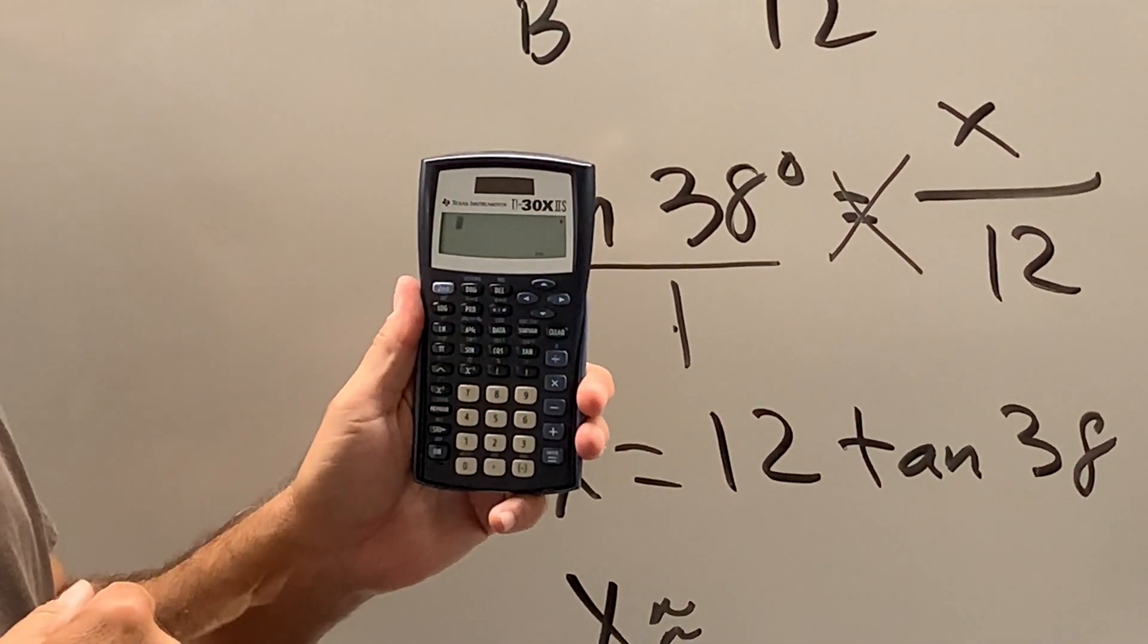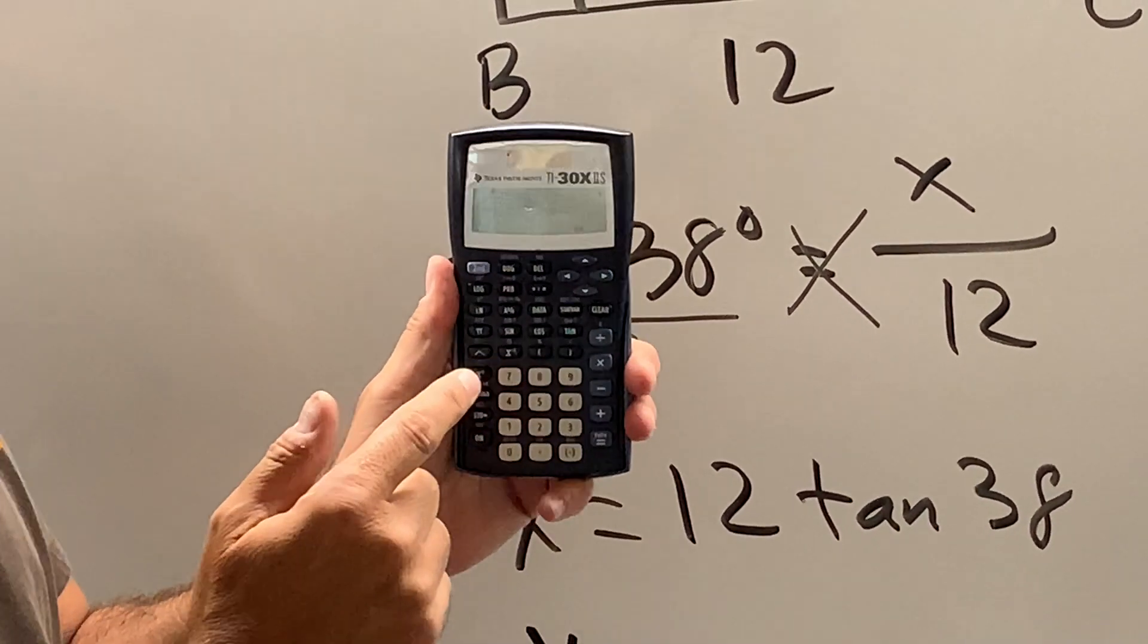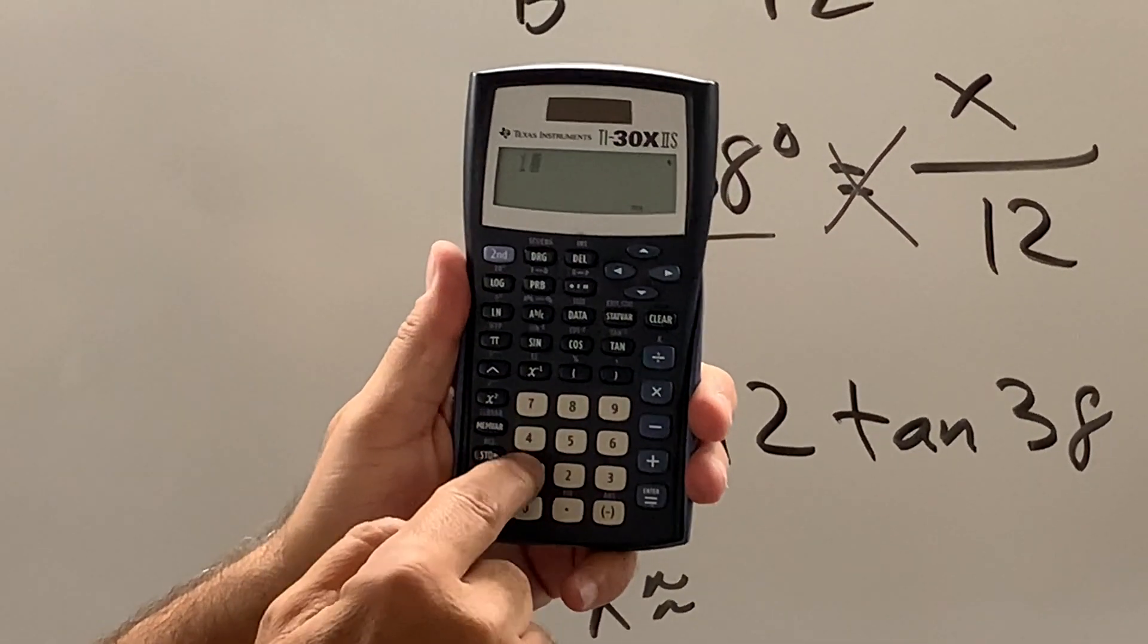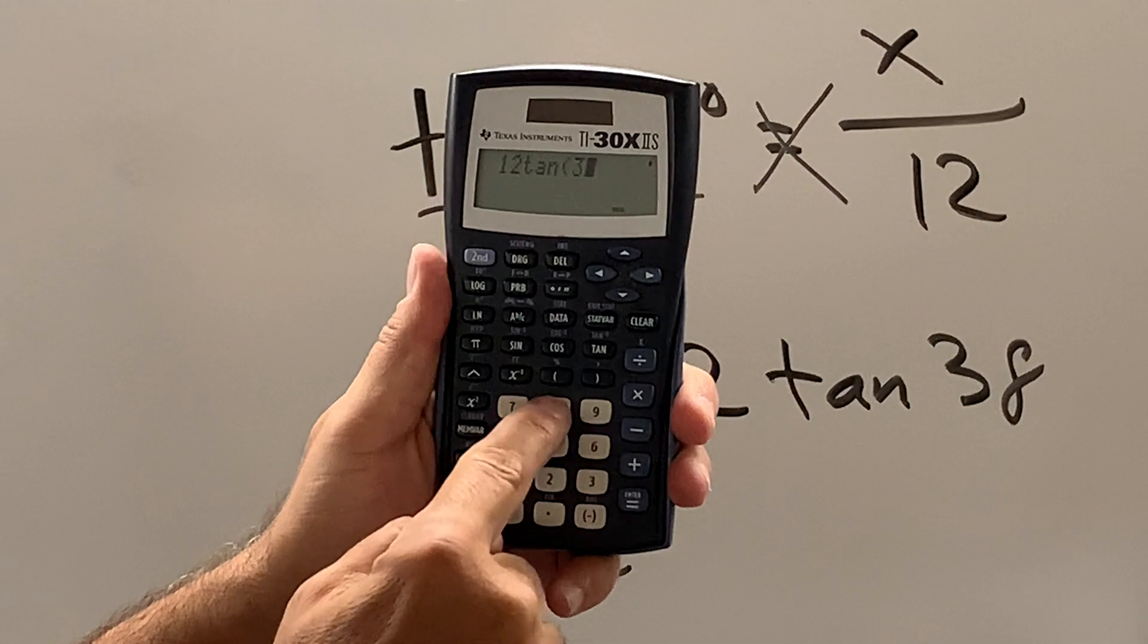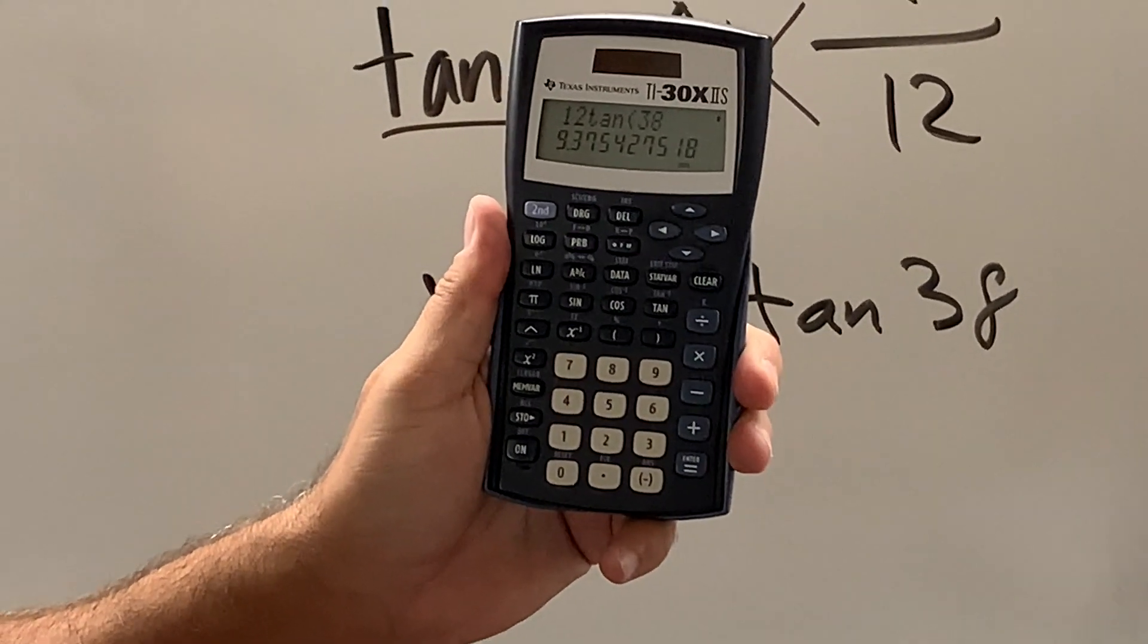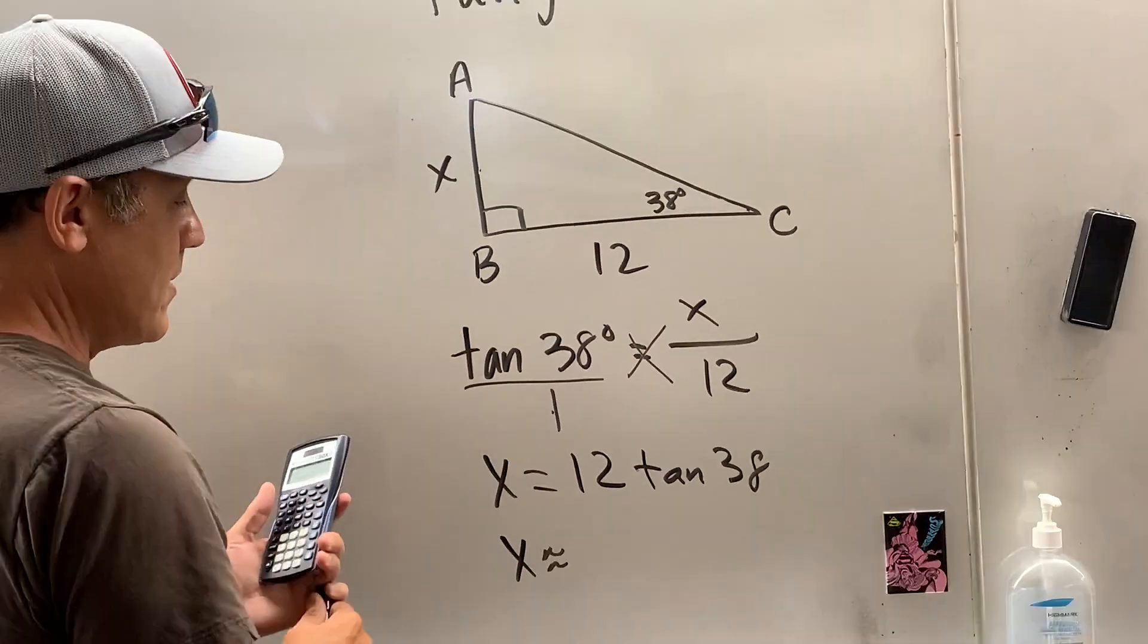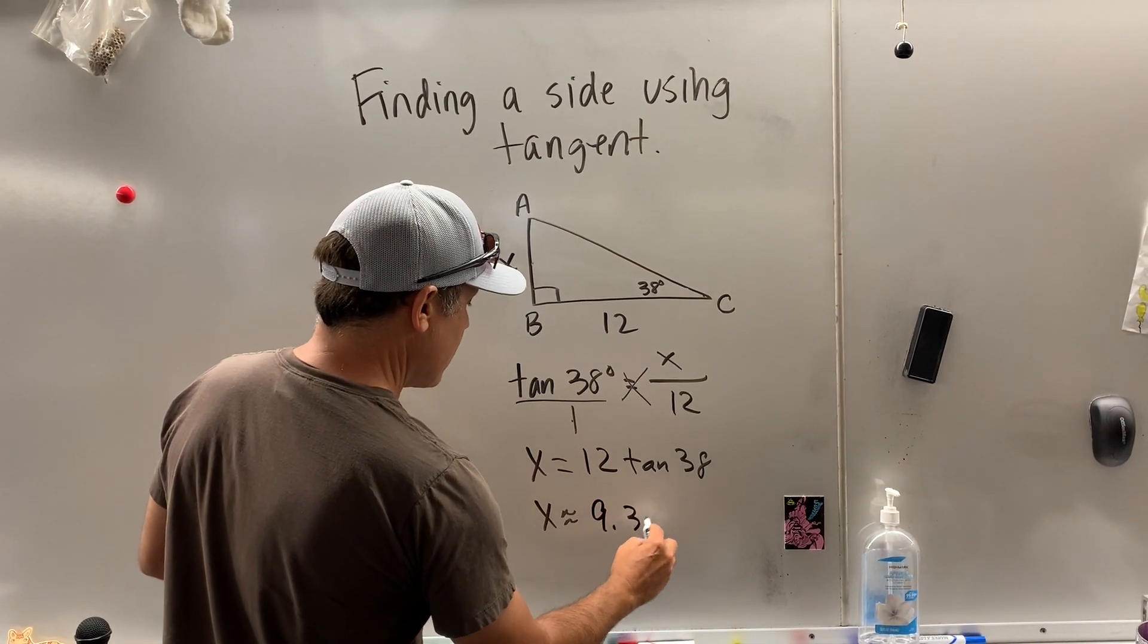I see a 12. I see the tangent button. See the tangent button? I see a 38. Hit equals. Bingo. Nine points. So let's round that to the hundreds. So we'll call it 9.38. So we'll say this x is about 9.38.